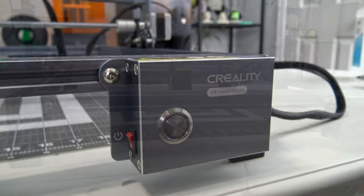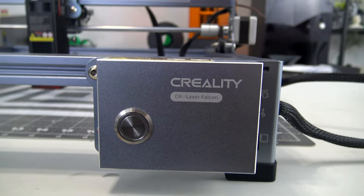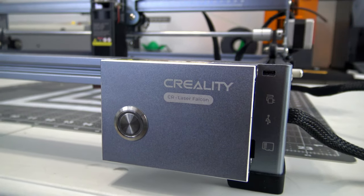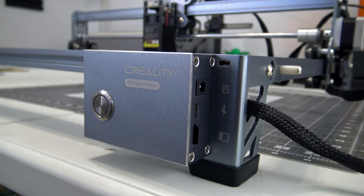The front of the machine consists of the control box. It has a single light up button on the front used for offline engraving. Around the side is the power input, USB type C input and a micro SD card slot.